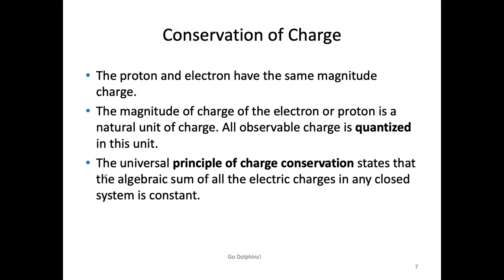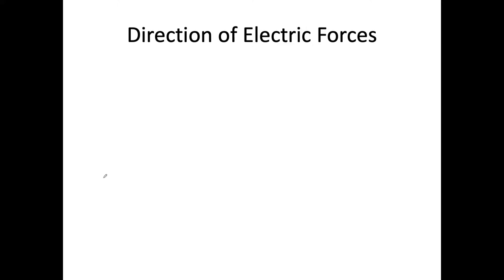To summarize: protons and electrons have the same magnitude of charge but different signs. Electrons carry negative charge; protons carry positive charge. In the laboratory, we can never observe a fraction of the charge of an electron or proton, because we cannot break them into pieces. And from all the experiments we have observed, charge is conserved in a closed system — we haven't observed anything that violates this conservation of charge.